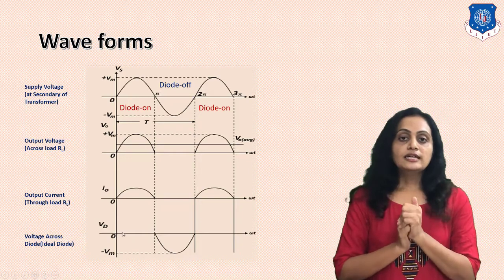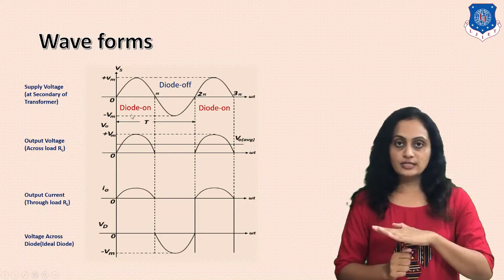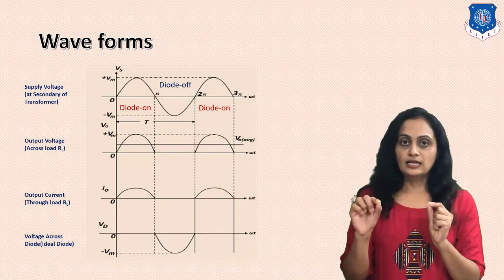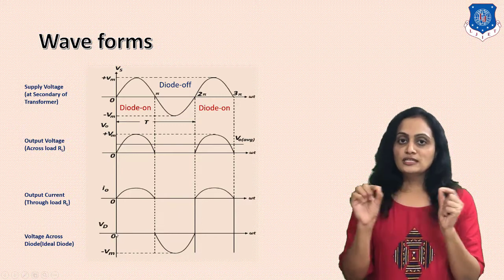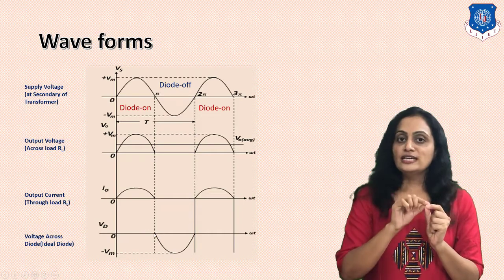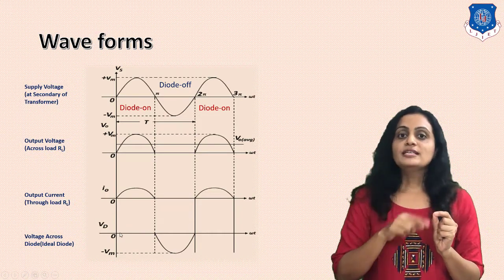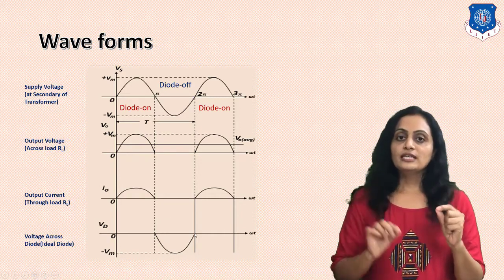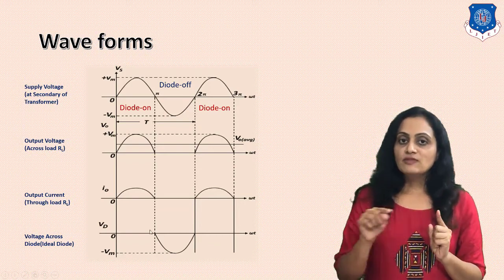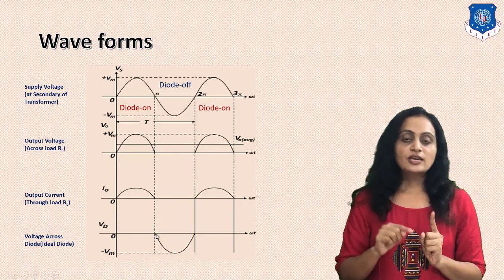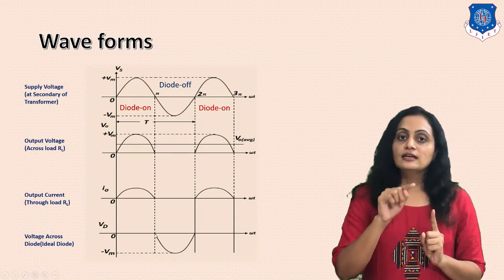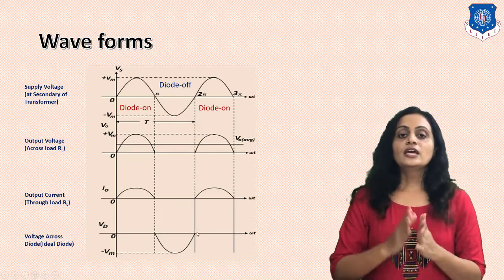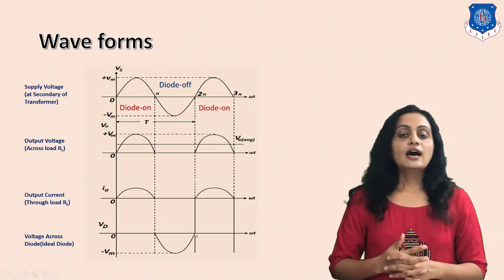The last waveform is the voltage across the diode. When the diode is in forward bias it acts as a closed switch — when both terminals are shorted, the voltage across the diode is zero. So when the diode is ON, the diode voltage is zero. When the diode is OFF (open switch), the voltage across the diode equals the secondary voltage. Therefore during the positive half cycle the diode voltage is zero, and during the negative half cycle the diode voltage equals the secondary voltage.